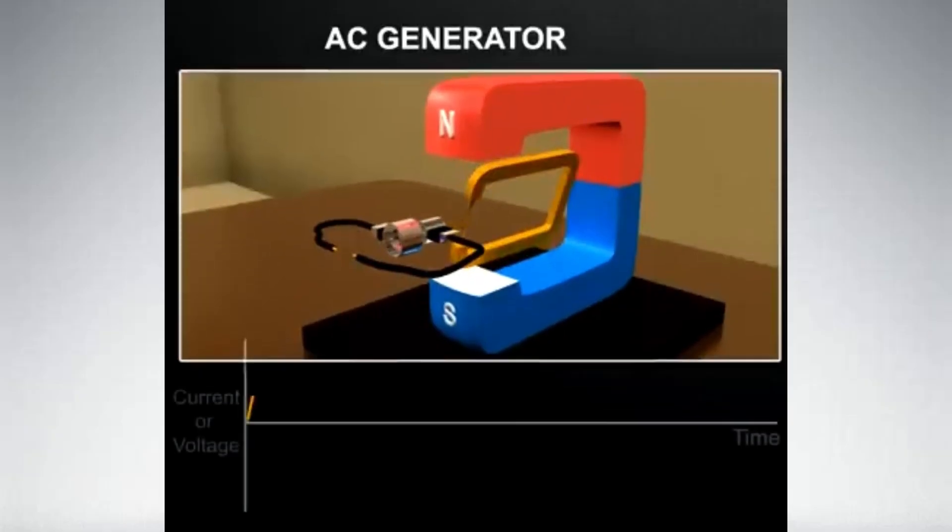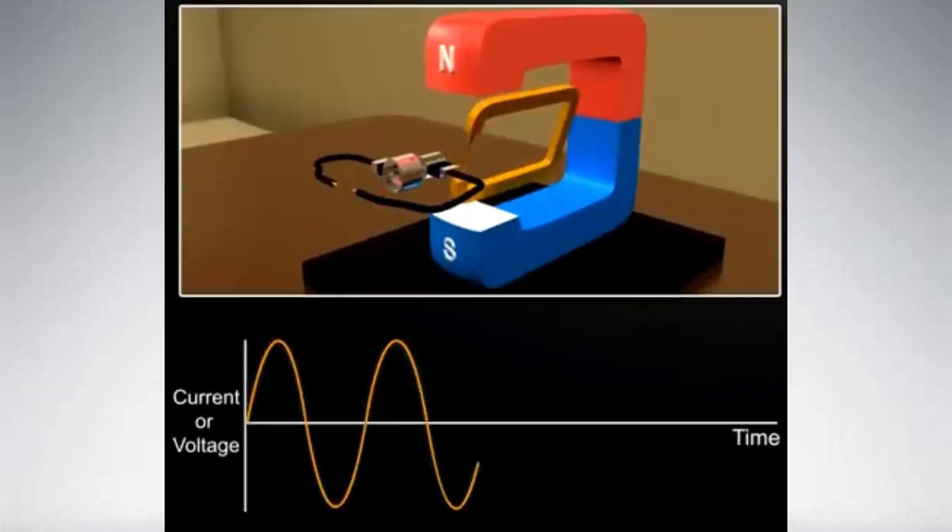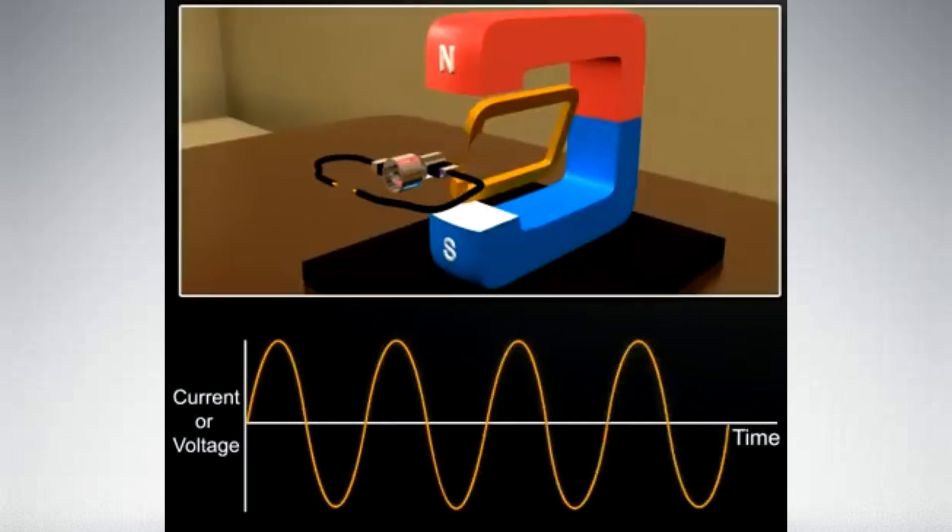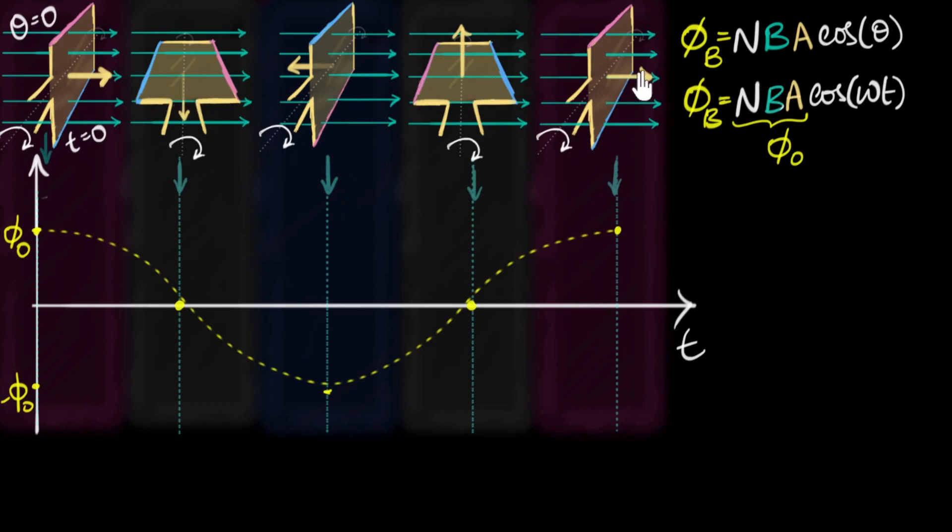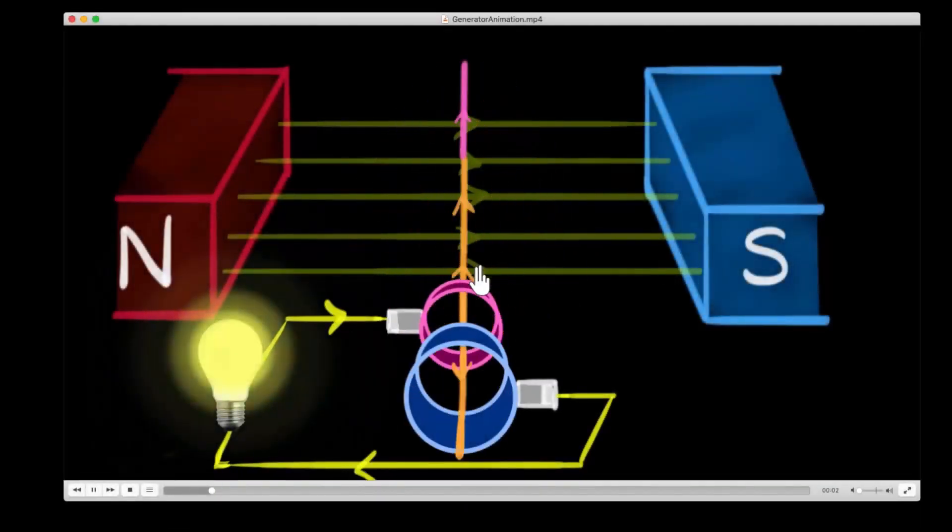So, to recap, electromagnetic induction is the generation of an electric current by moving a conductor through a magnetic field. It's a principle that revolutionized the world of electricity, and it's at the core of many devices we use every day.